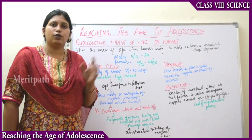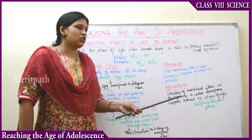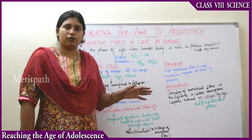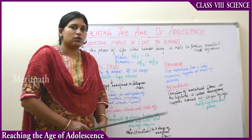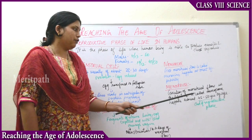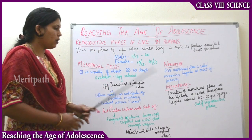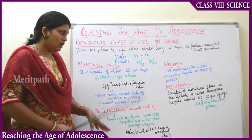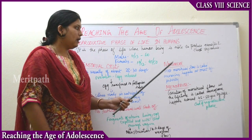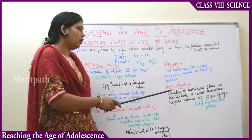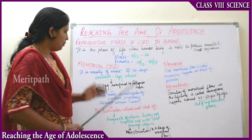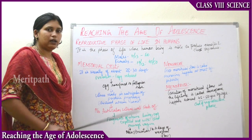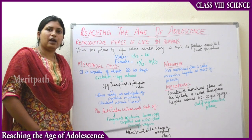Next is menopause, which is also related to the female reproductive system. It is the cessation of menstrual flow — that means the stopping of menstruation. Cessation of menstrual flow in a lifetime is known as menopause, and menopause happens around 45 to 50 years of age, only in females. Menarche is the starting of the reproductive phase and menopause is the end of the reproductive phase. The menstrual cycle happens every month on an average of 28 to 30 days.